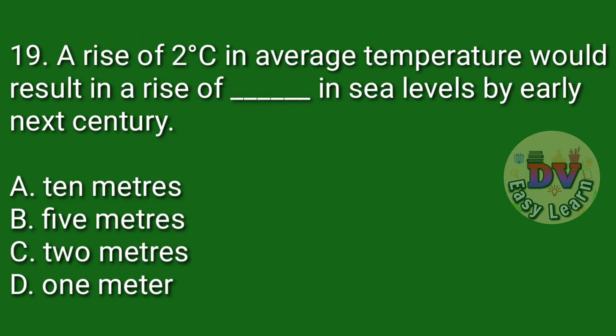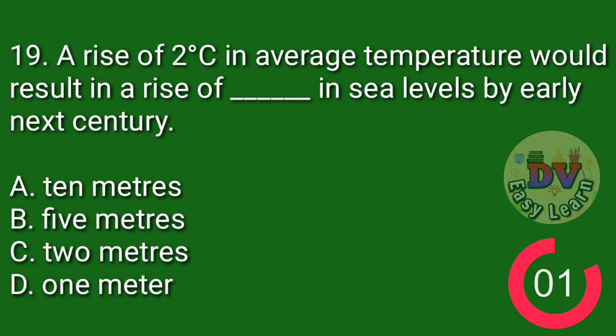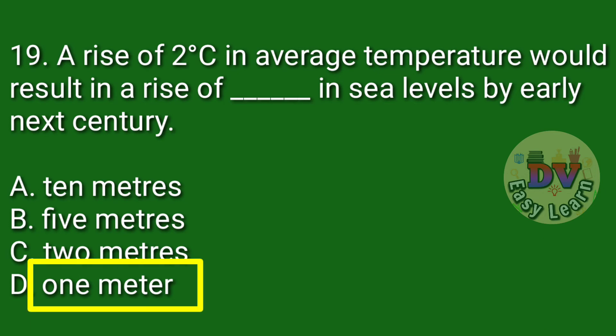Question number 19. A rise of 2 degrees Celsius in average temperature would result in a rise of dash in sea levels by early next century. Correct answer: 1 meter.